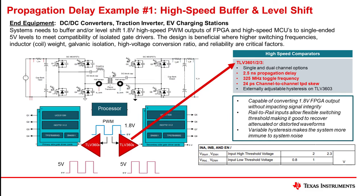Another key spec in this application is skew. Some gate drivers will use dual inputs, and in applications where fast-switching output is required, the inputs must precisely toggle to meet the correct output condition, thus ensuring the low skew is important. It's also important to note that as you get into high frequencies, the propagation delay becomes a bigger factor of consideration, as it allows for much more precise output waveforms.